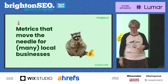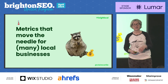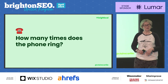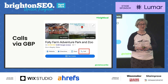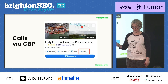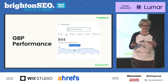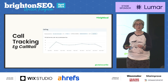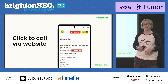Let's look at the metrics the client really wants to know about — the stakeholder-facing ones. How many times does the phone ring? If someone clicks the call button in Google Business Profile, they're probably calling because they want to do business with you — that shows really good intent. We get that as a metric from Google Business Profile performance. We've also got call tracking tools like CallRail, and then click-to-call via our website.